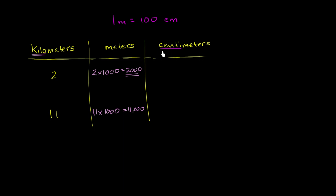And that's because the prefix centi means one hundredth. Another way you could write it is that one centimeter is equal to one hundredth of a meter. But here we have a certain number of meters, and each of those meters are going to be equivalent to 100 centimeters.